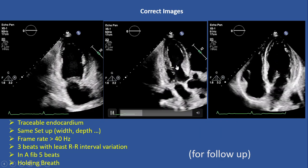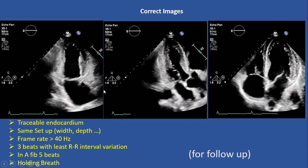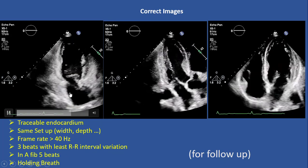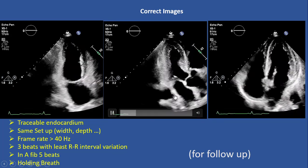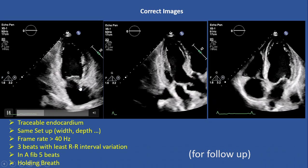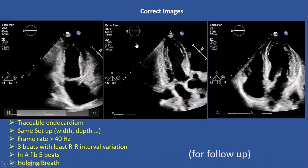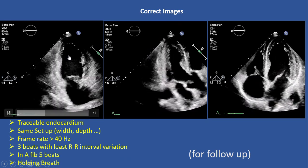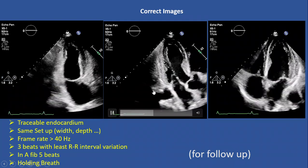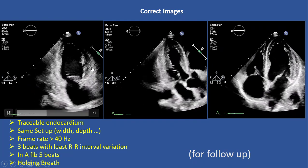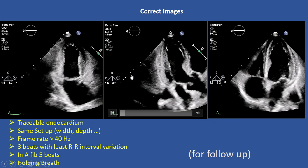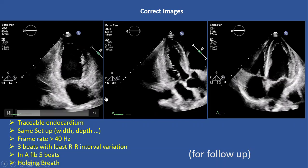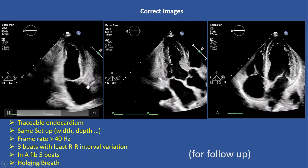Second, we have to use the same setup for all three views — the depth and width of the sector should be identical so the frame rate will be the same for all of them. The optimal frame rate for strain echo should be between 50 to 55 fps, but based on patient body habitus, above 40 is acceptable.